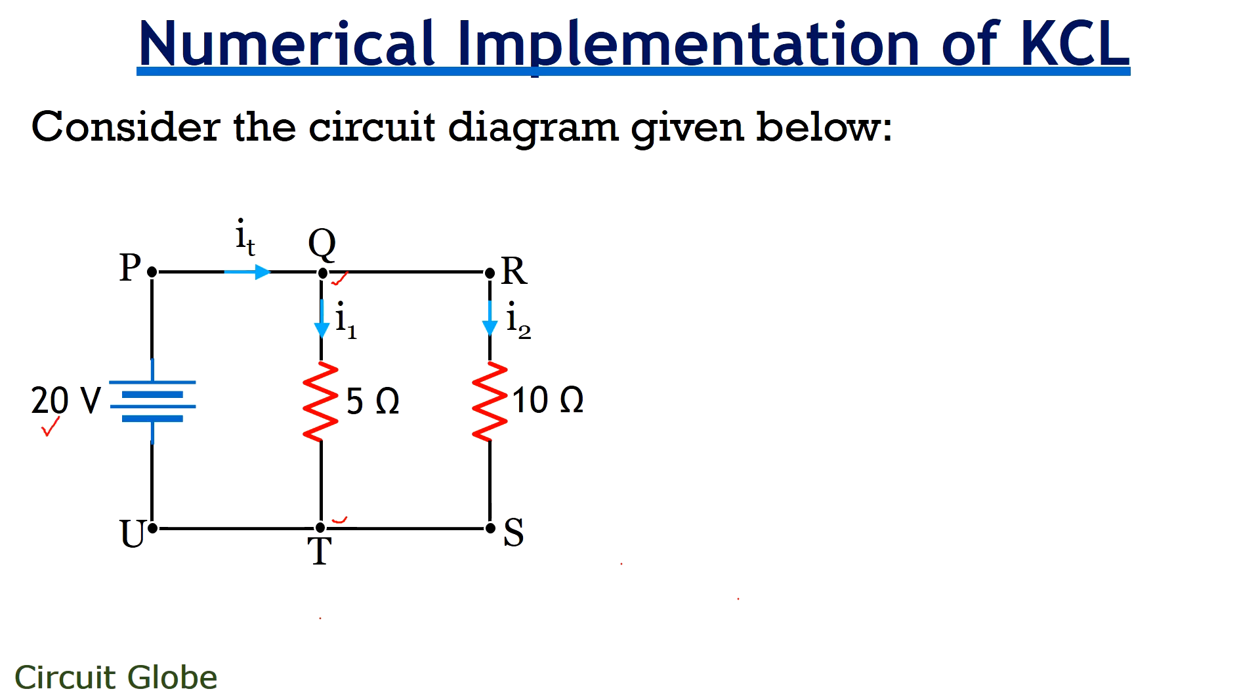Initially, the current from 20V power supply moves towards node P and from here it reaches node Q. As node Q is a junction, so this total current IT will split to move in two different directions. One from this direction and the other from this particular direction. We know the current flowing into and out of a junction is known as branch current.